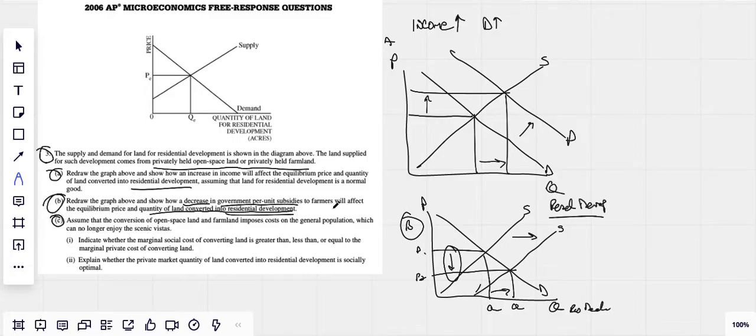Let's look at C. Assume the conversion of open space land and farmland imposes costs on the general population. This is a negative cost, implied negative externality, which can no longer enjoy the scenic vistas. Indicate whether the marginal social cost of converting land is greater than, less than, or equal to the marginal private cost of converting land. So we should know how to just draw. First of all, it's a cost. We know it's negative. They don't talk about whether it's a production, but we know it sucks. We have two cost curves, social cost and private cost is what we're looking at. We could simply do our two curves. We also know that it's a negative, so we know our dead weight loss triangle is going to point to the left because it's negative. We also know our dead weight loss triangle points to the curve.